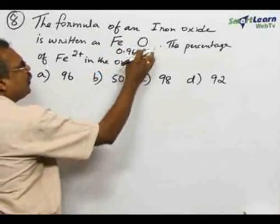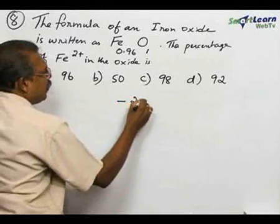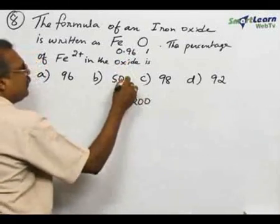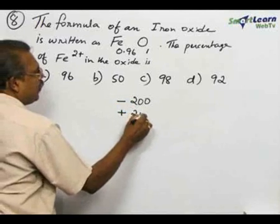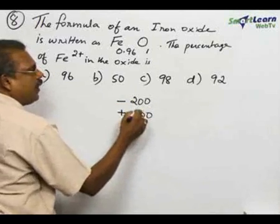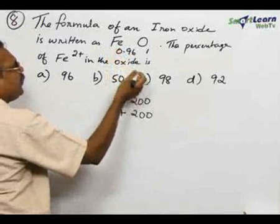If you take 100 into account, then total negative charge must be minus 200. And for electrical neutrality, the total positive charge must be plus 200. And this plus 200 is shared between Fe 2+ ion and Fe 3+ ion.